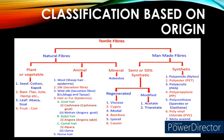Under plant or vegetable fiber, there are four different types. Number one — seed fiber: cotton and kapok. Number two — bast fibers: flax, jute, hemp, ramie, etc. Number three — leaf fibers: abaca and sisal. Number four — fruit fiber: example, coir.